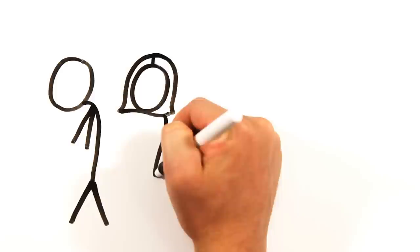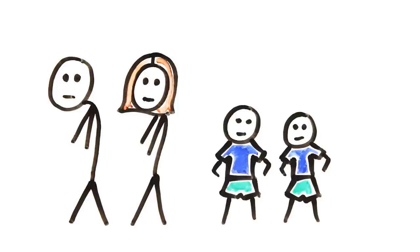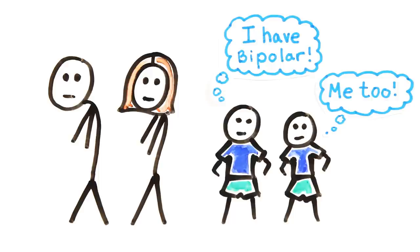Many other genes have been identified which increase the likelihood of depression too, and it makes sense when you consider that depression and bipolar disorder both run in families. Studies of identical twins show that if one has bipolar disorder, the other has a 60-80% chance of developing it too.